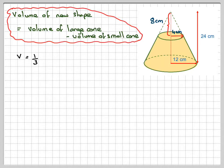So the volume of the large cone will be 1/3 times π times the radius squared which is 12 squared times the height which is 24. And then we need to subtract 1/3 times π times the radius of this one which is 4 squared times its height which is 8.